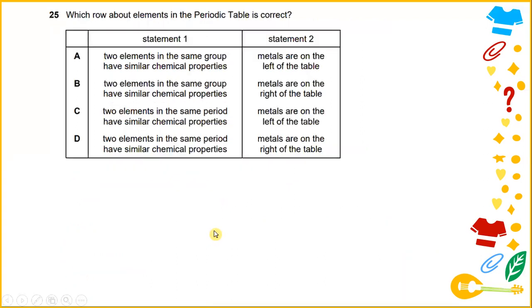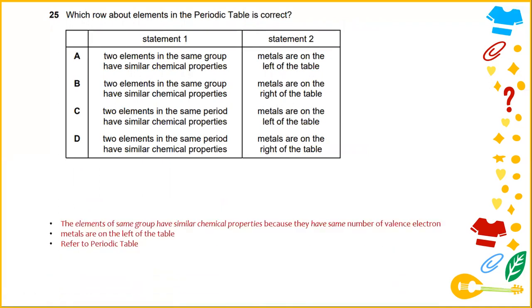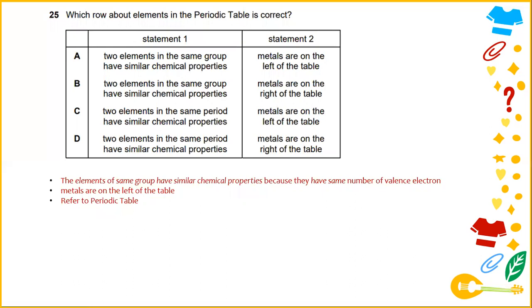Number 25, which rule about elements in the periodic table is correct. Elements of the same group have similar chemical properties because they have the same number of valence electrons, and statement number two, metals are on the left of the table. The answer is A. Please refer to the chapter periodic table.